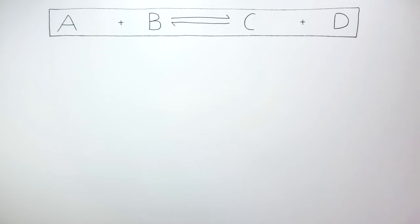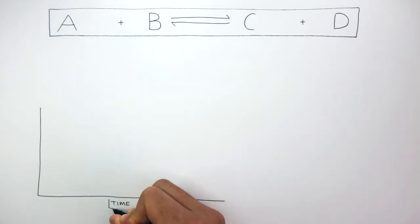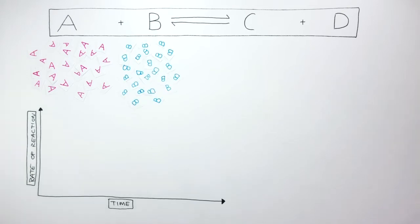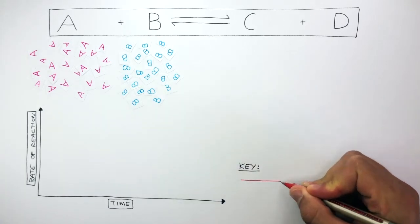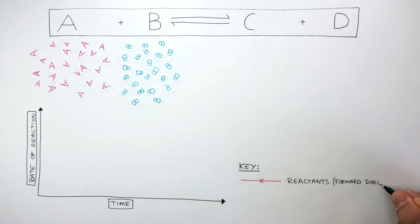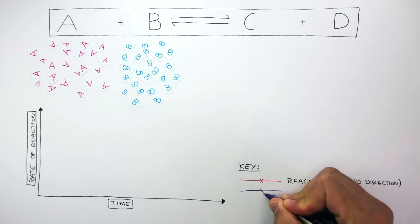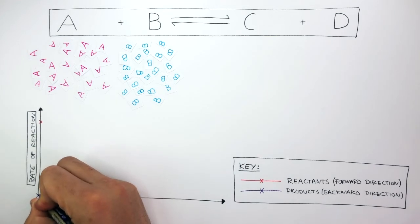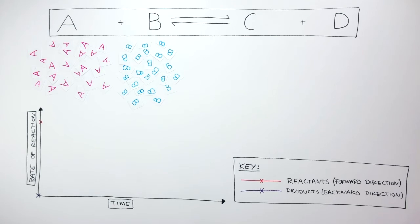To understand what a dynamic equilibrium is, we will use a graph where time is on the x-axis and rate of reaction is on the y-axis. At the beginning of the reaction, we have a high concentration of A and B, the reactants. The red line represents the reactants and the forward direction; the purple line represents the products and the backward direction. There is a high rate of reaction for the reactants and no rate of reaction for the products at the very beginning.